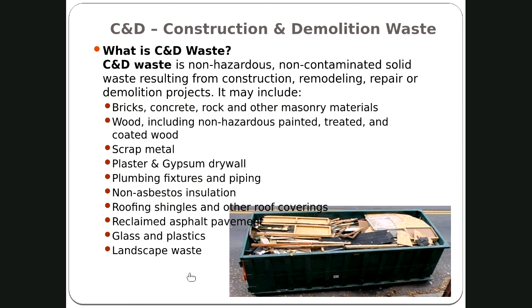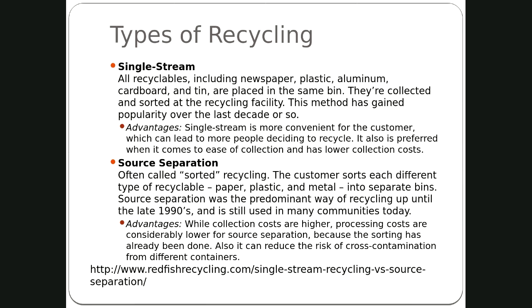Different types of recycling: single stream is where all recyclables — cardboard, aluminum, plastic — are placed in the same bin and sent to the recycling facility. Sort separation requires a different bin for each material type — glass, metal, paper separated out. Collection costs are higher for sort separation but processing costs are lower.